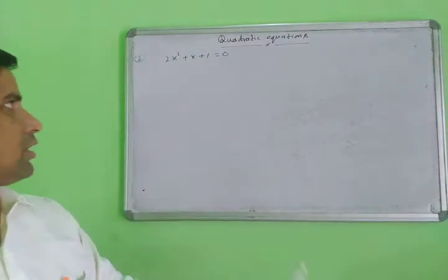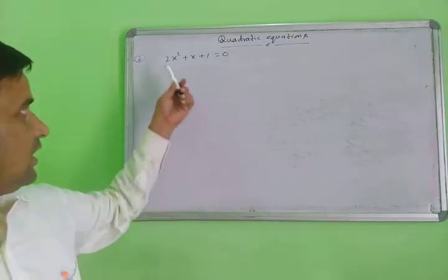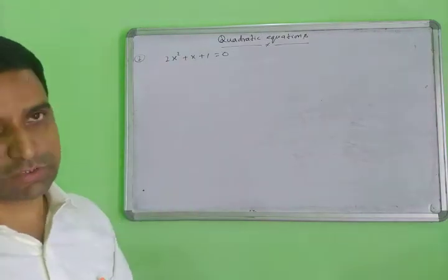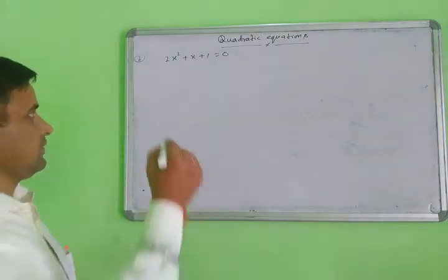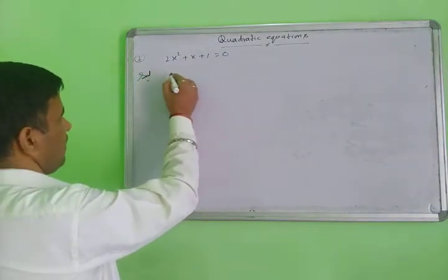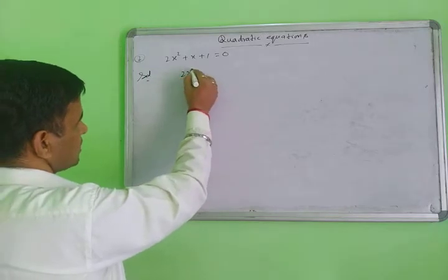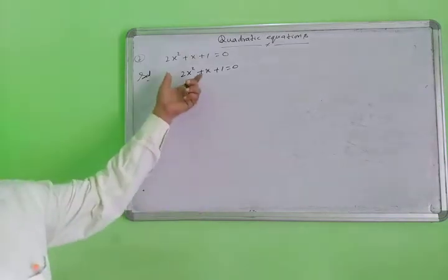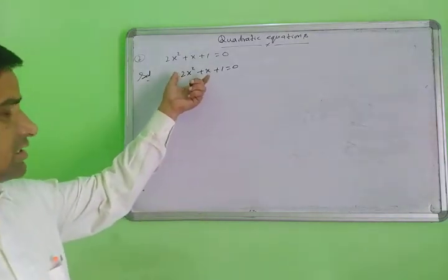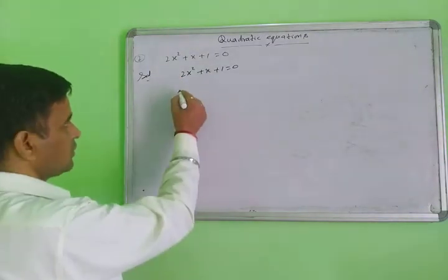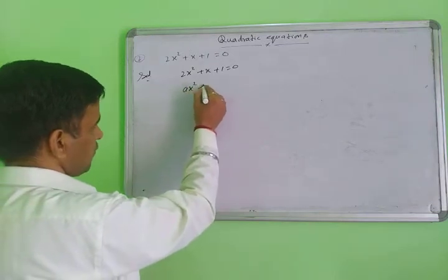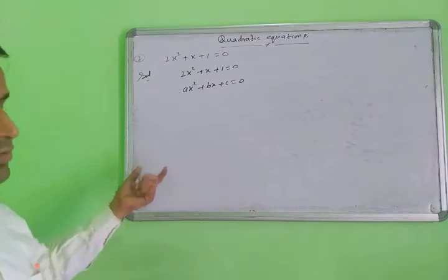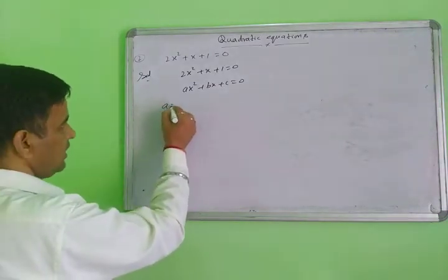Now the next question: 2x² + x + 1 = 0. This equation is in the standard form ax² + bx + c = 0. Equating coefficients: a = 2, b = 1, and c = 1. First we will check whether this equation has real roots or imaginary roots using the discriminant.